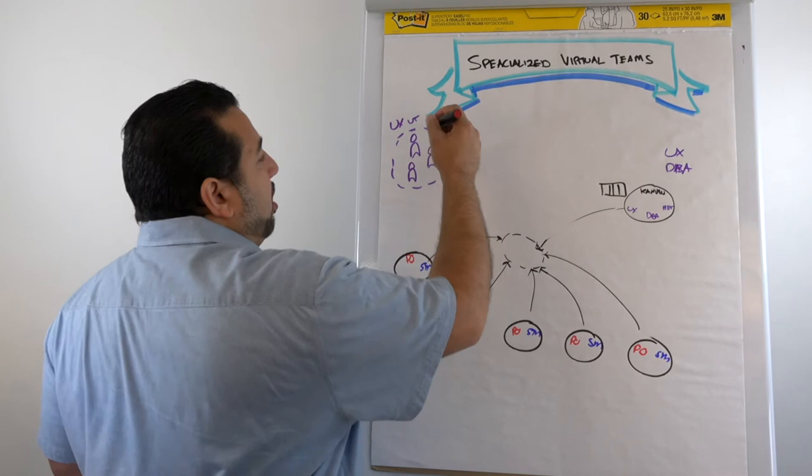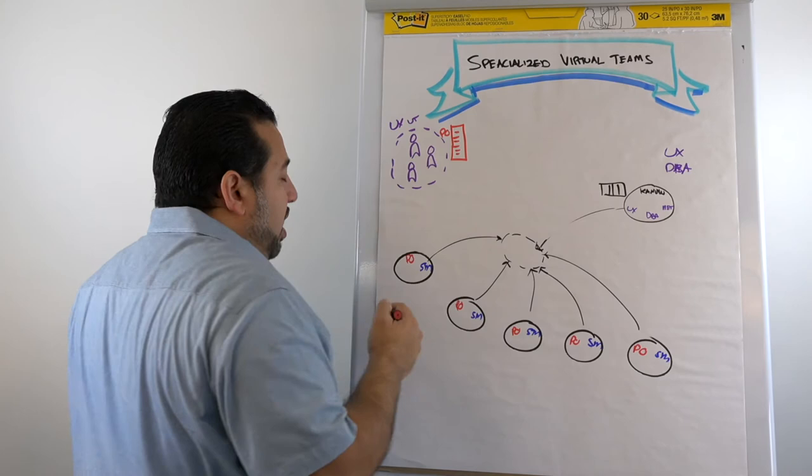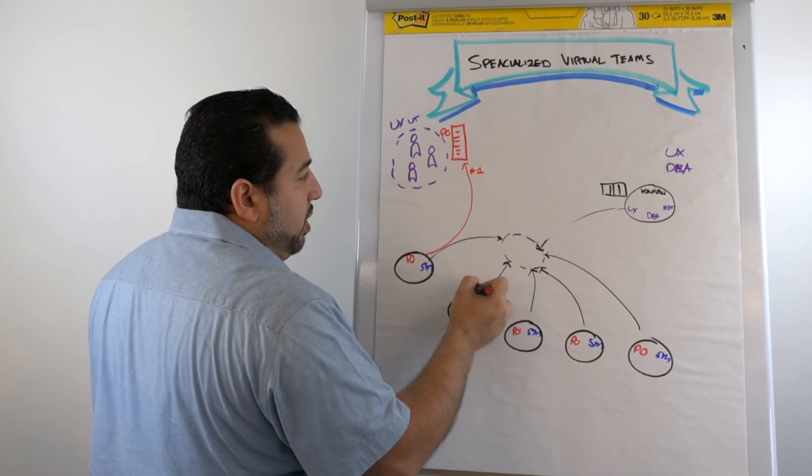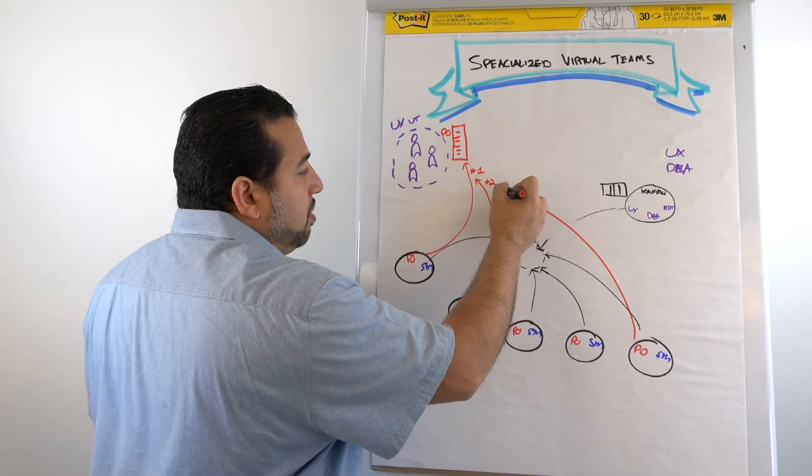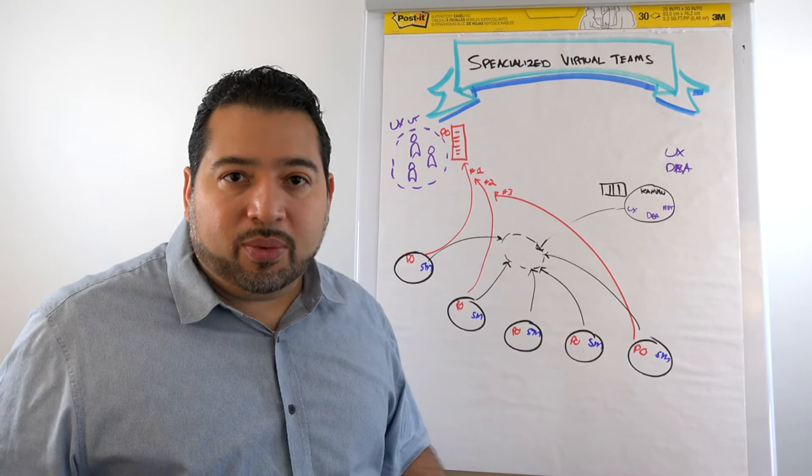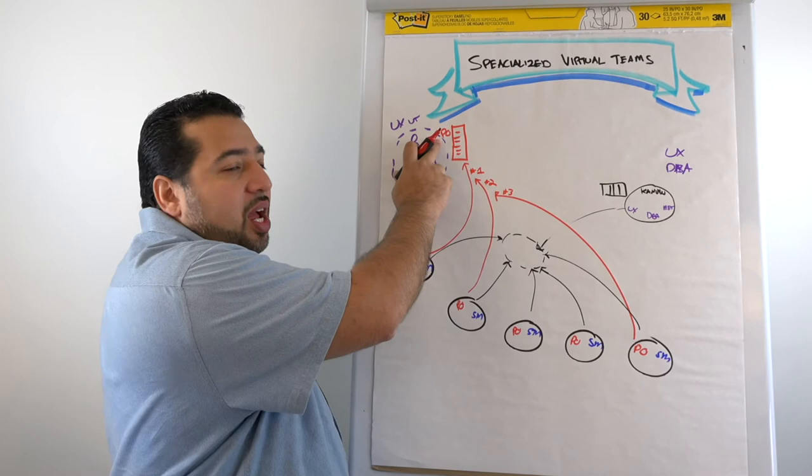But what they have is a product owner, some type of product owner, or some person that prioritizes the work. And so how this works is that each team or product owners would request into the virtual team: hey, UX team, we need help with this. So request number one, and we need help with this request number two. And there's some type of agreement on the virtual team. This is what you need to make it work is that when you submit a request, we'll respond within 24 or 48 hours to let you know where you are in the priority. We'll let you know where you are on the priority.